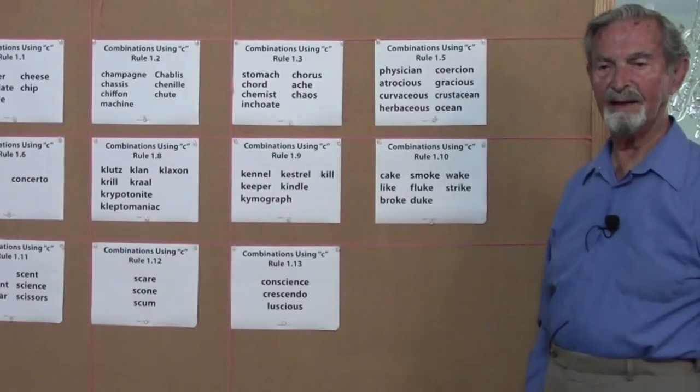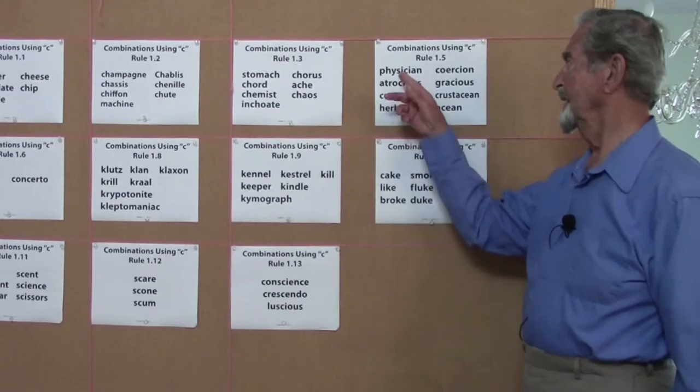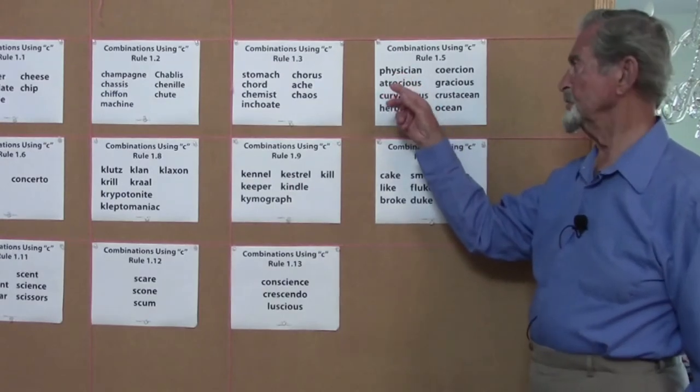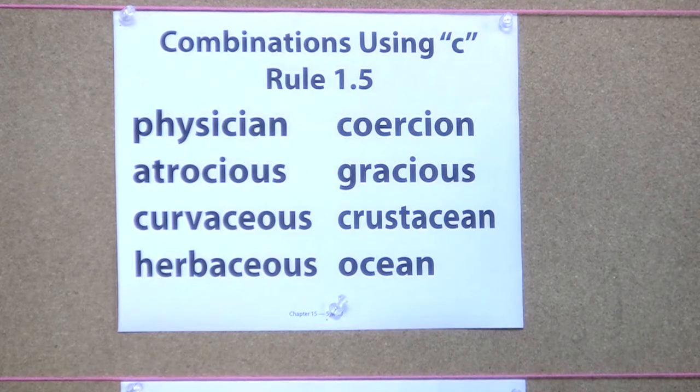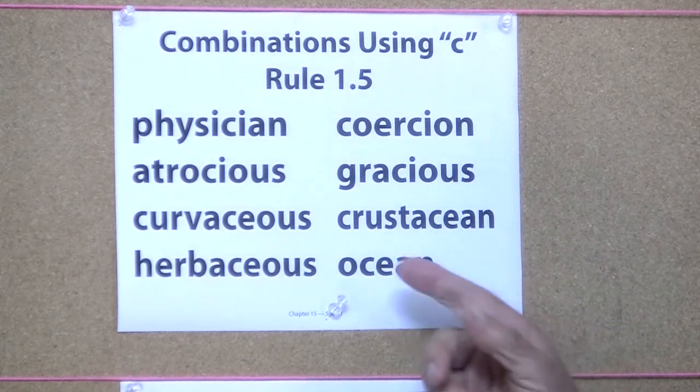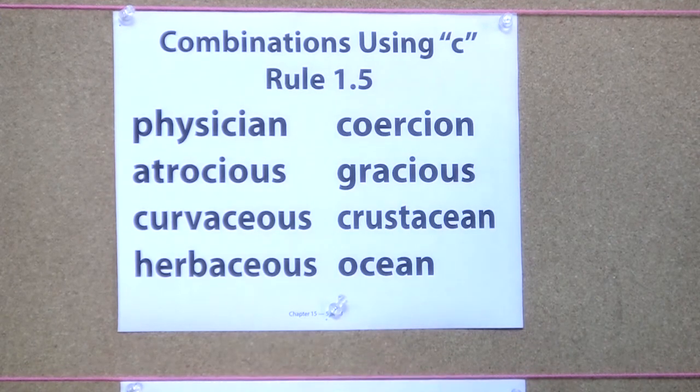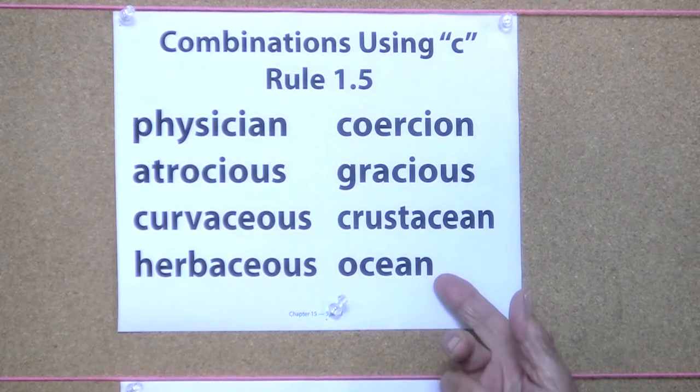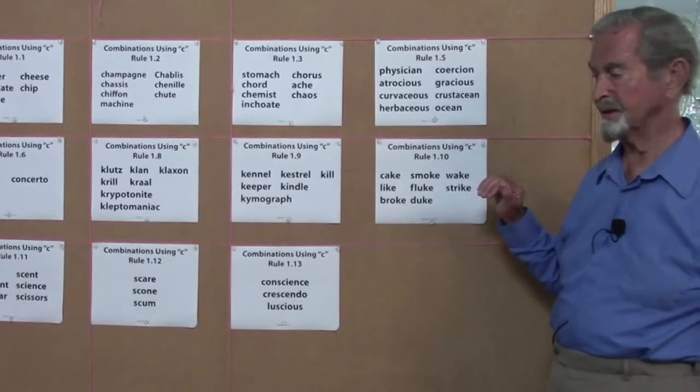Here we have words with clearly an SH sound, but spelt using the letter C: physician, coercion, atrocious, gracious, curvaceous, crustacean, herbaceous, and ocean. Definitely an SH sound, but using the letter C.